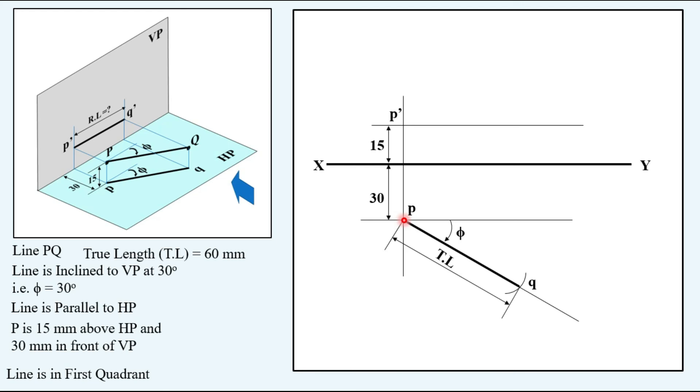Taking 15 mm above on this vertical projector of P and locating front view, that is P dash. Taking a vertical projector up from top view point Q, because on this vertical projector we will have the corresponding front view point. So intersection of this and this line is Q dash. This is the reduced length. P dash Q dash is nothing but the reduced front view length.